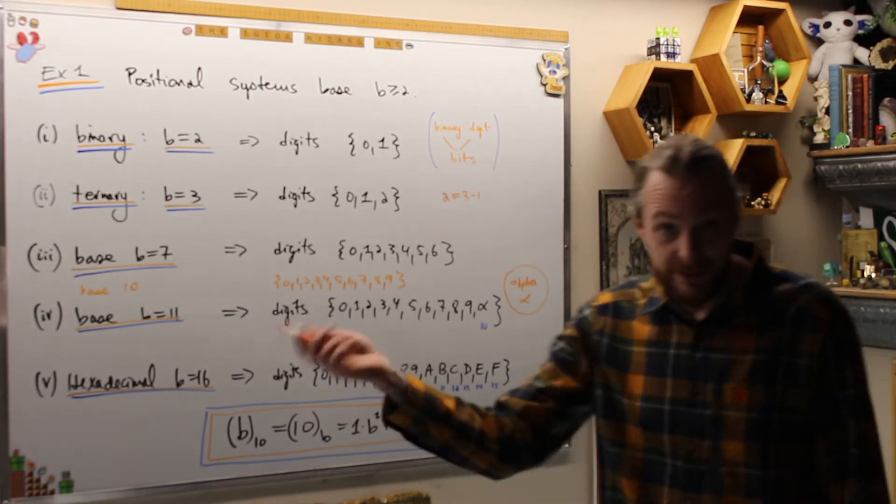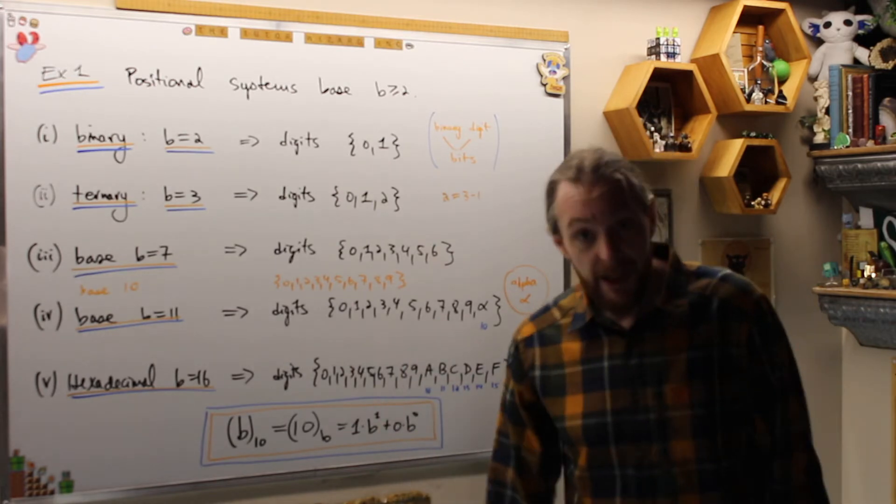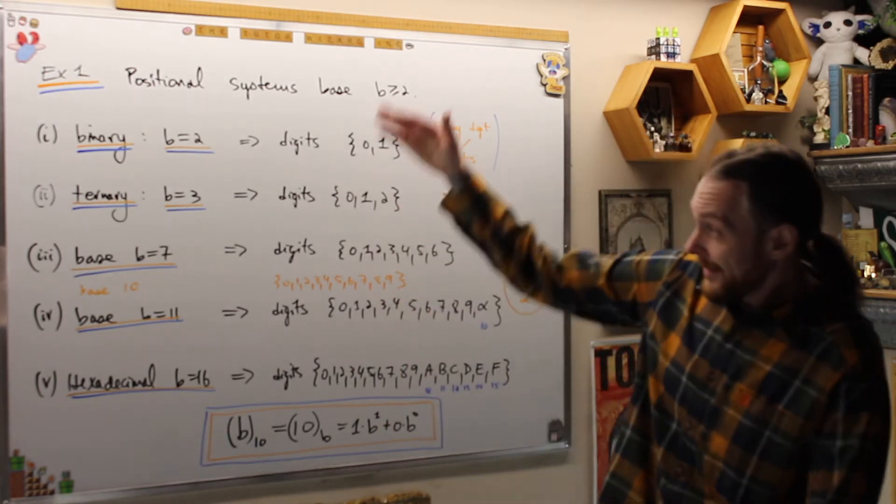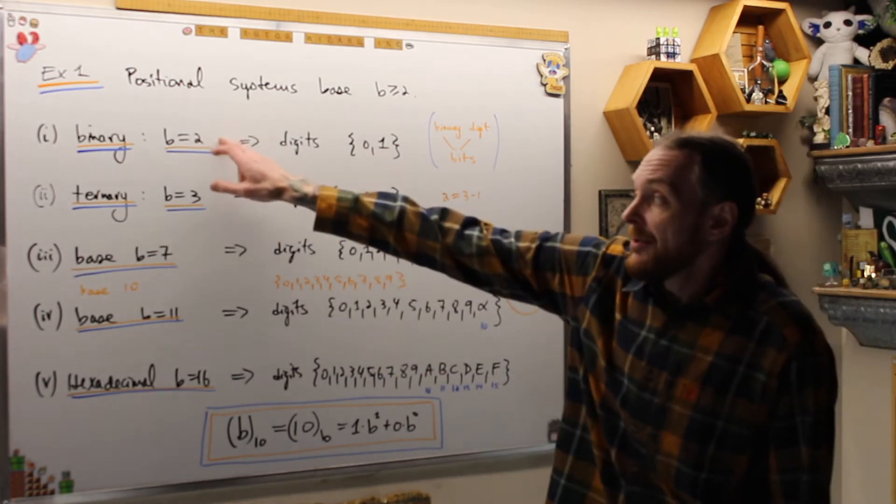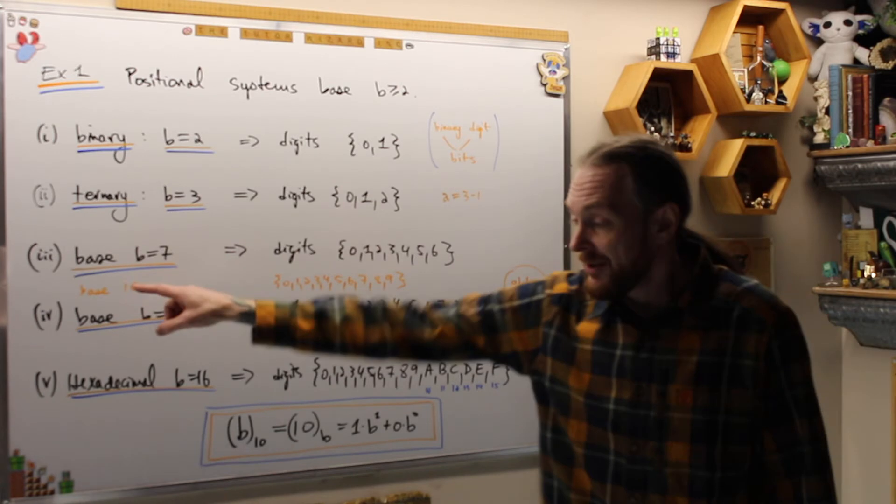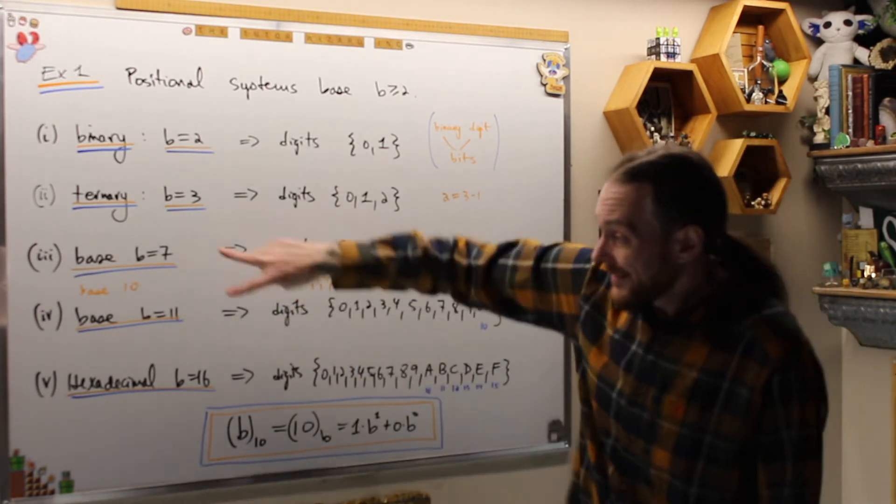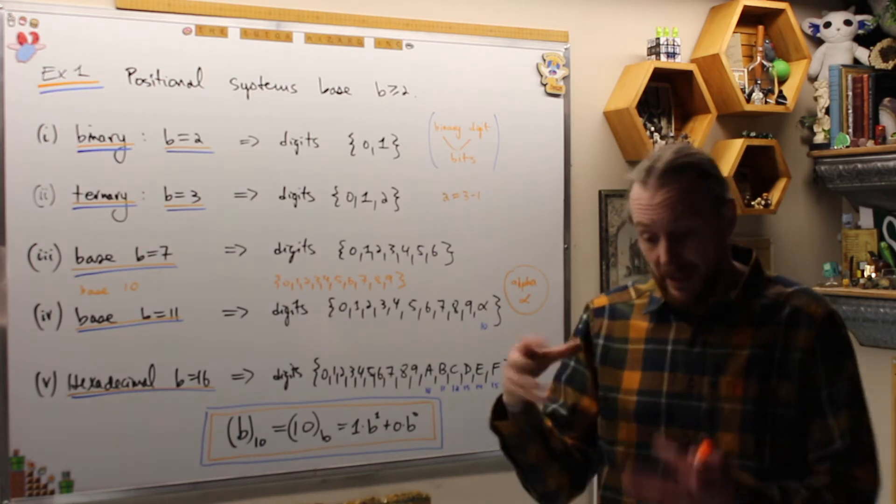Again, why? Because base B in base 10 representation, which you're used to, is always 1-0 base B. The classic joke is there are 1-0 kinds of people in the world: those who know binary and those who don't. So these are examples of positional systems. Computers like to use base 2 and base 16. Our species for the most part likes to use base 10. In this class we're going to use base 7 and base 11 to do arithmetic and see how these things work.